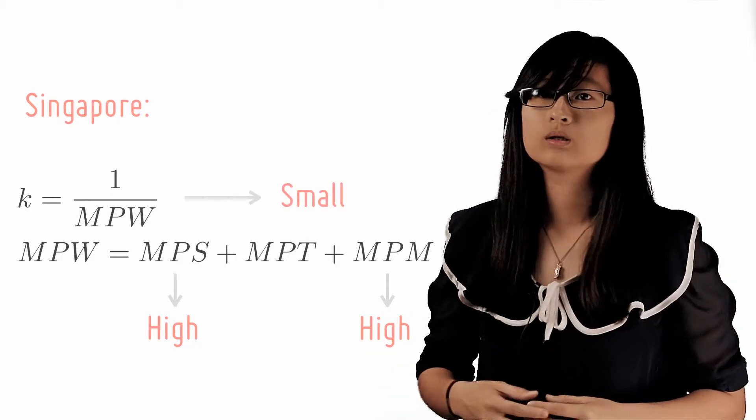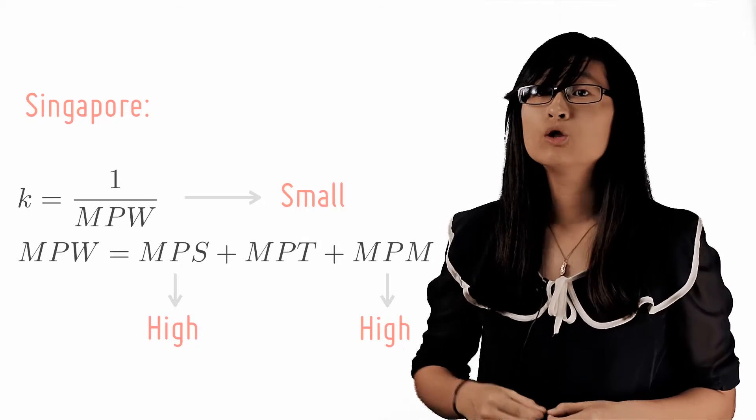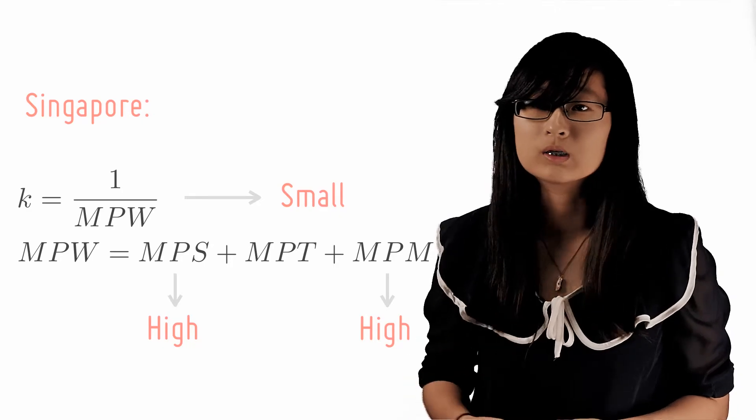As a result, Singapore's multiplier is very small, making it much more difficult to increase national income through demand management tools like fiscal and monetary policy.